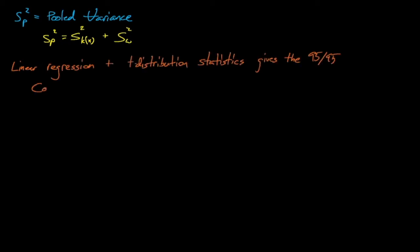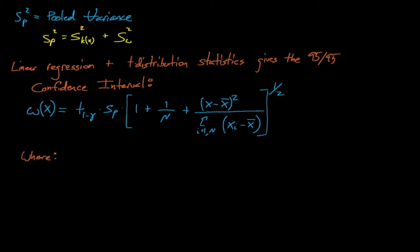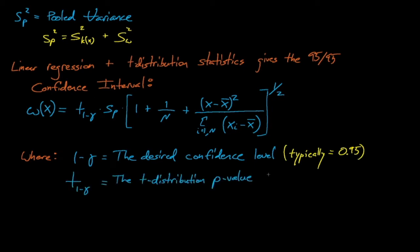linear regression and t distribution statistics allow us to calculate the 95-95 confidence interval for some point x along our regression, where 1 minus gamma is the desired confidence level, which equals 0.95 for our 95-95 interval, and t of 1 minus gamma is the t distribution p value for the confidence level 1 minus gamma with n minus 2 degrees of freedom.